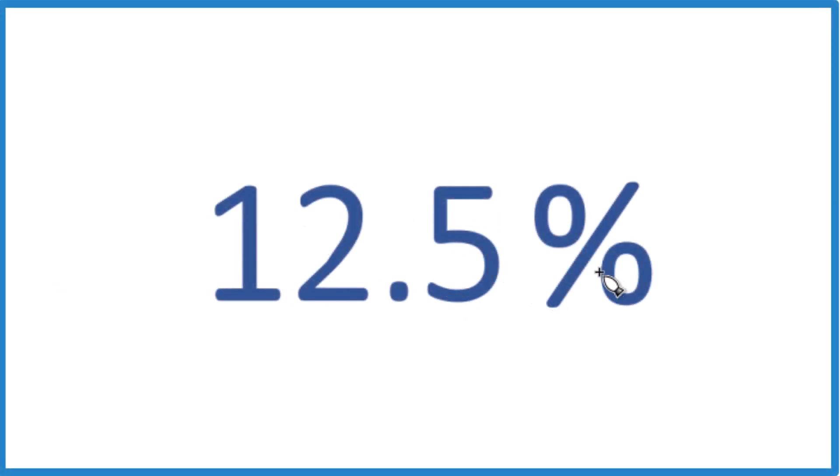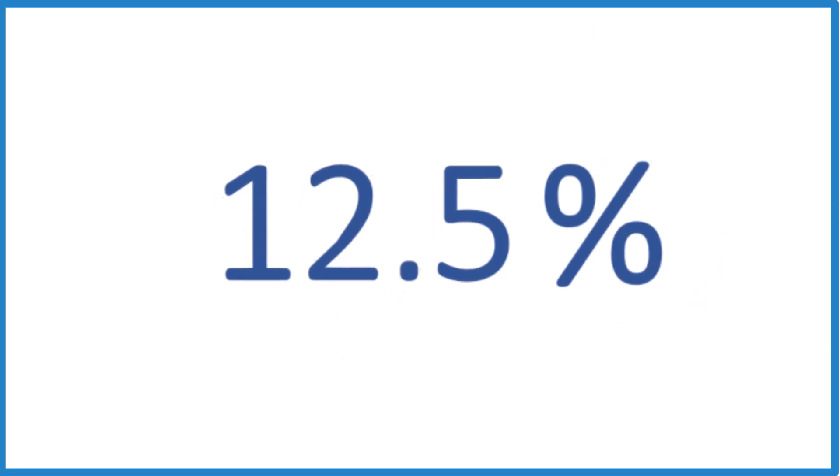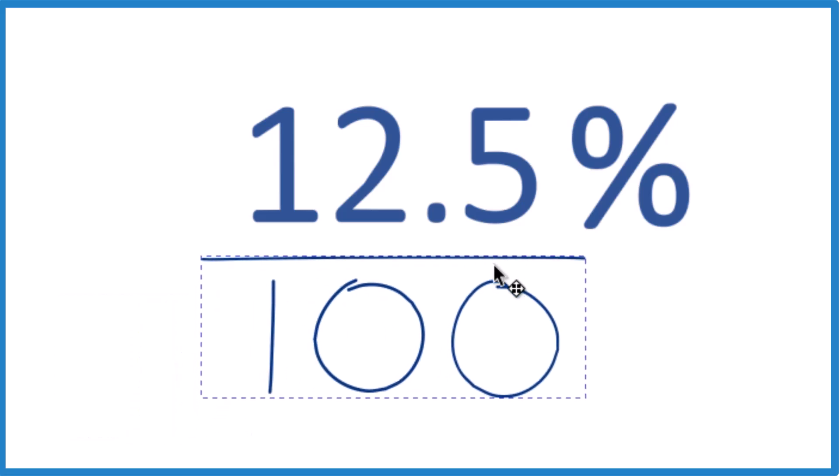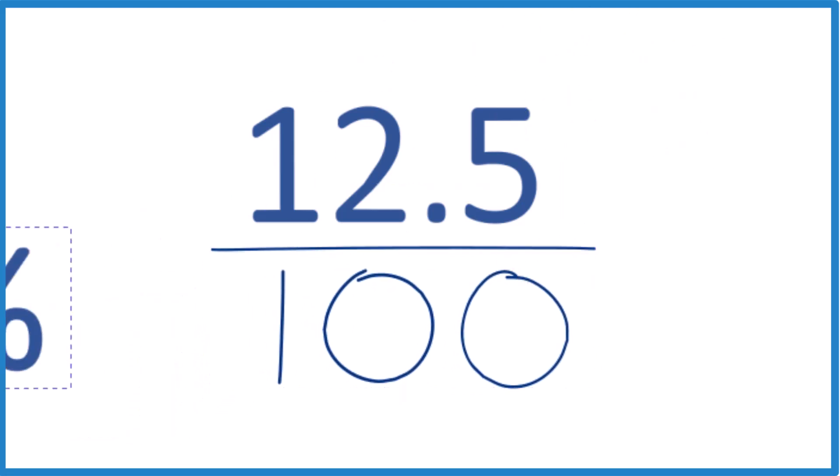Let's write 12.5% as a decimal and then as a fraction. First off, 12.5%, this percentage sign here you can consider to be over 100. So we would say 12.5 over 100, and then we just get rid of the percentage sign.